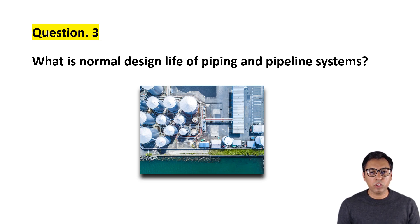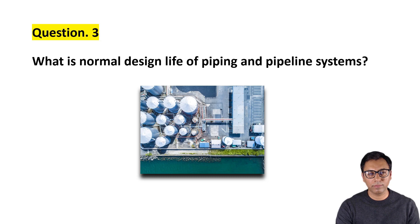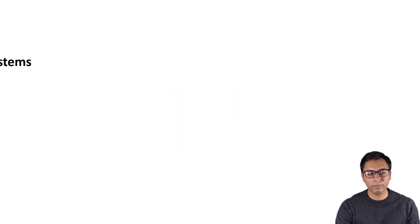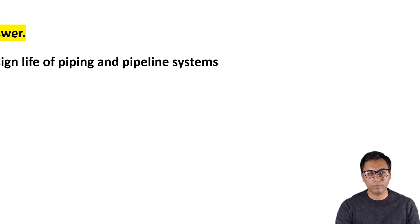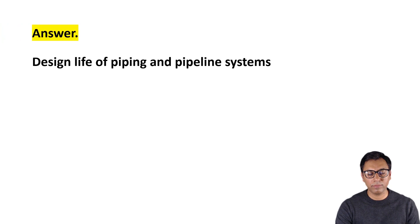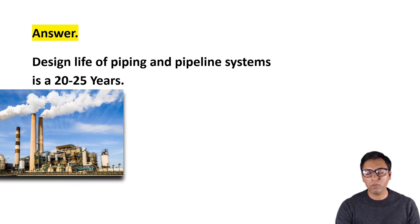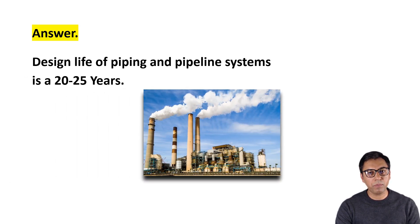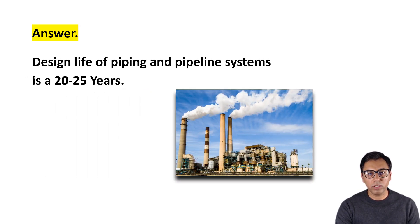Let's talk about the answer in the next slides. As an industry practice, the design life of a piping and pipeline system is 20 to 25 years.